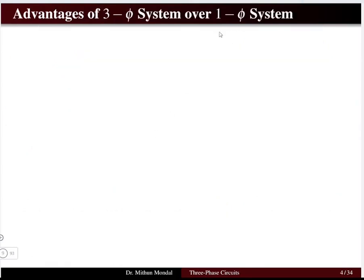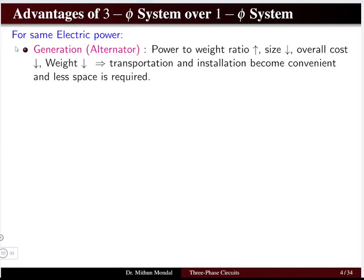Why are we moving from single-phase to three-phase systems? What are the advantages? All comparisons assume the power transmitted is equal whether single-phase or three-phase. On the generation side, when you use a three-phase synchronous generator or alternator, the power-to-weight ratio increases, meaning the size of the alternator decreases compared to a single-phase system transmitting the same power.